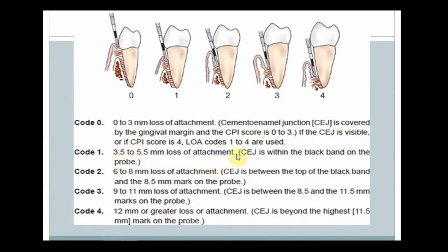Code 1 is 3.5–5.5 mm loss of attachment — the CEJ is within the black band. Code 2 is 6–8 mm loss of attachment — the CEJ is between the top of the black band and the 8.5 mm ring. Code 3 is 9–11 mm loss of attachment — the CEJ is between the 8.5 and 9.5 mm rings. Code 4 is 12 mm or greater — the CEJ is beyond the 11.5 mm ring.